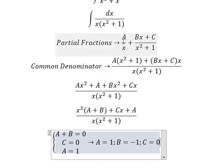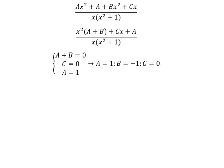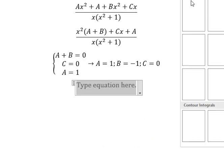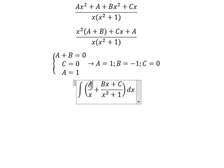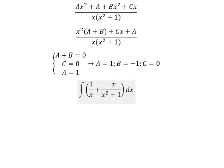And now we put A, B, C going here. A, that's number one. B, that's negative. C is number zero. The integration one over x, we have ln of the absolute value of x. The integration of this one, we have negative one over two ln of the absolute value of x squared plus one, and we put C. This is the end. Thank you.